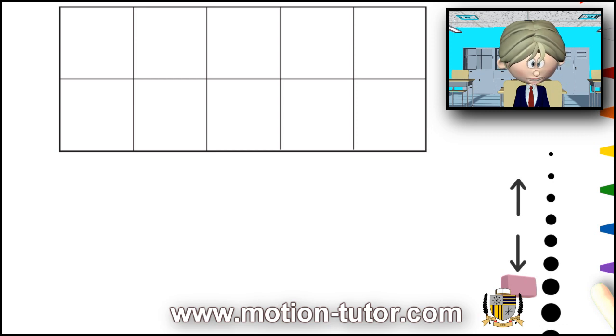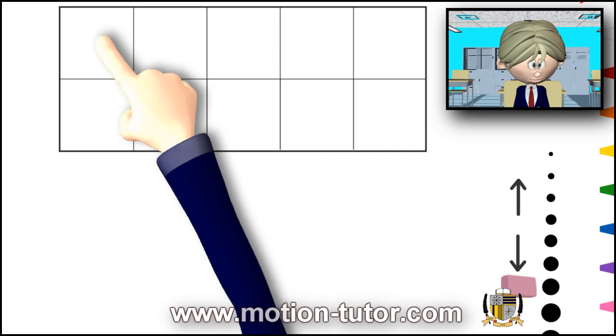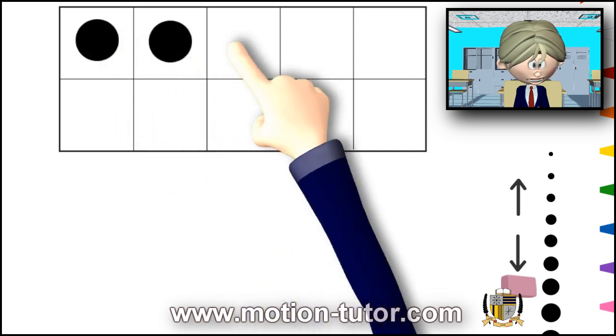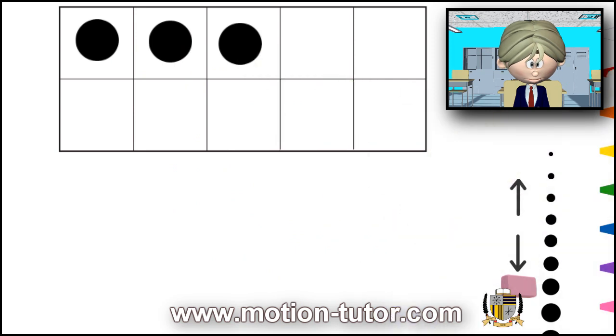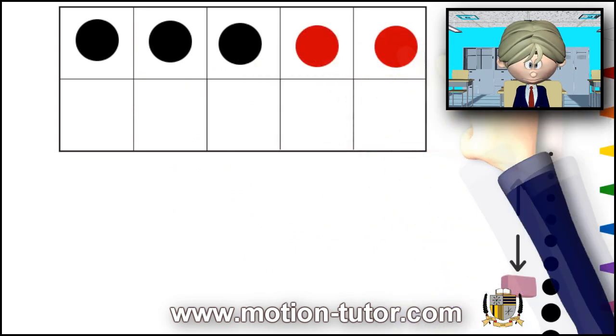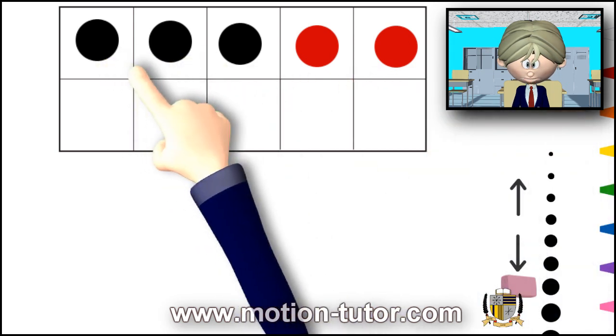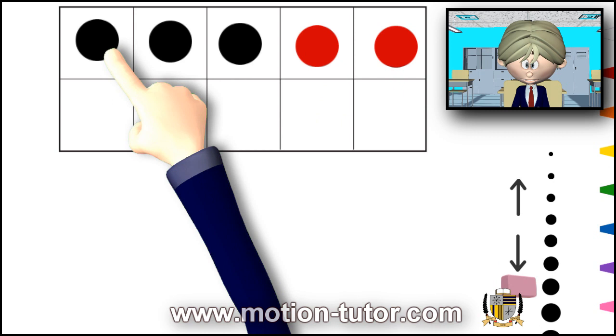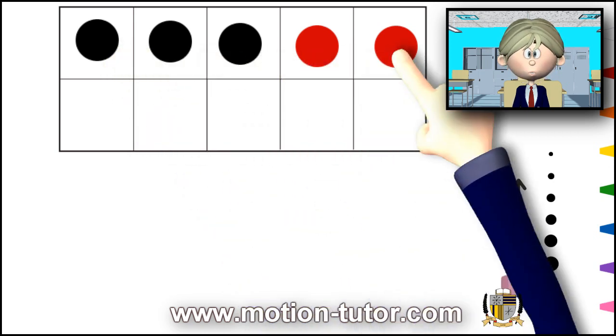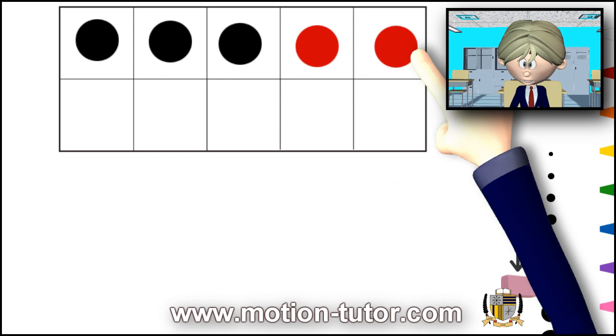Now let me review something that I did with the 5-frame in a couple of lessons ago. In the lesson in which I made 5 using 2 different colors, and I'll show you an example. So I have 1, 2, 3 black circles and 2 red circles. And looking at this, we see it's 3 and 2, and together that made 5.